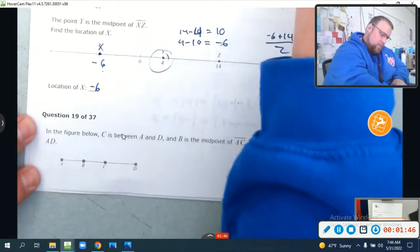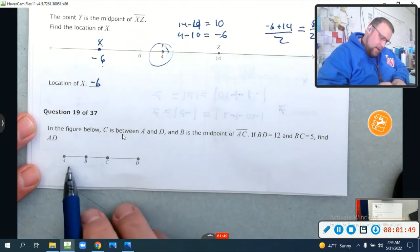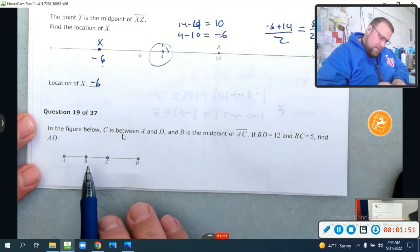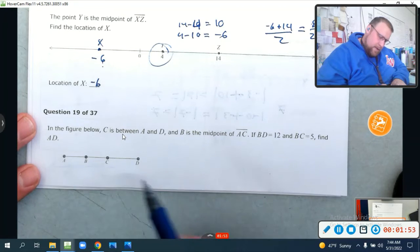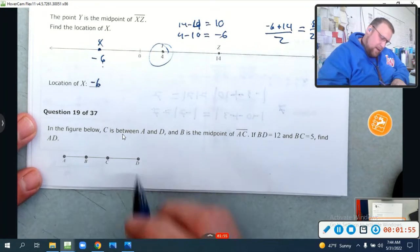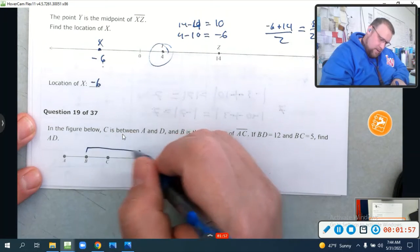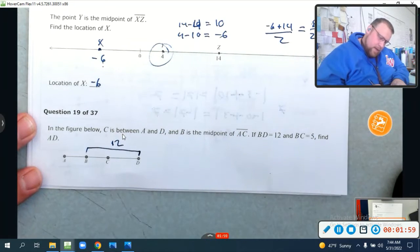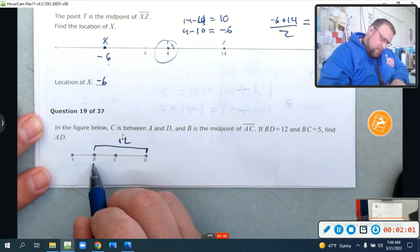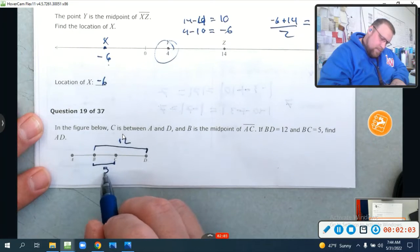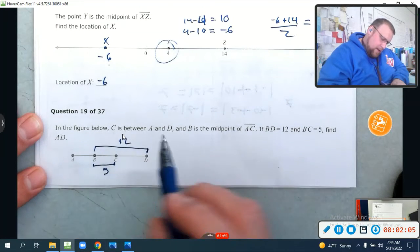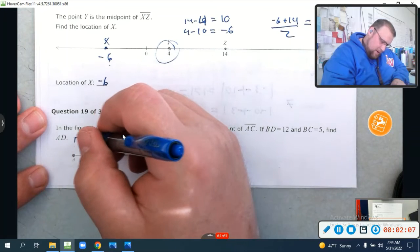In the figure below, C is between A and D. And B is the midpoint of AC. If BD is 12 and BC equals 5, find AD.